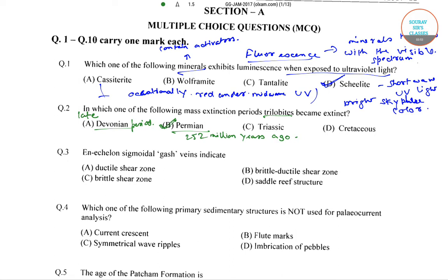All trilobites except proetids died out in the late Devonian, but these trilobites finally disappeared in the mass extinction at the end of the Permian era, which was about 252 million years ago. So the correct answer of question number two is option B, that is Permian.